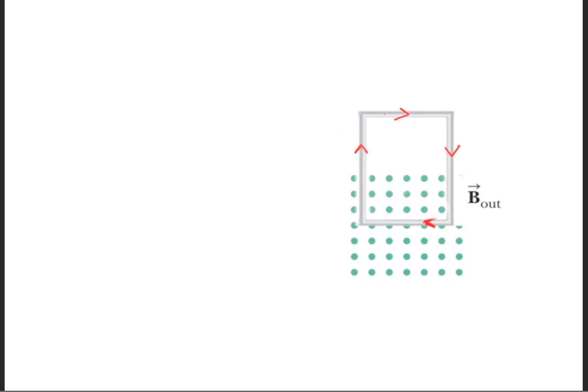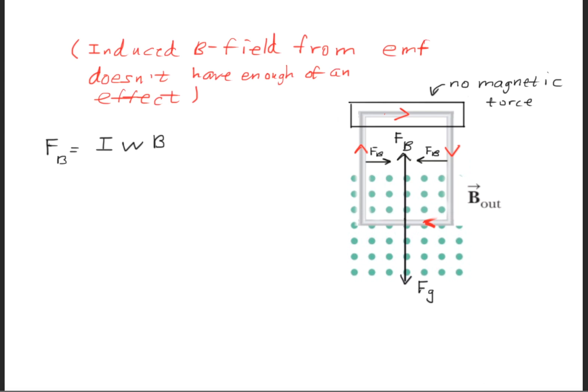Let's look at the diagram once more. The loop of wire is falling down into the magnetic field, and we know the induced current will be moving clockwise. Let's draw the forces acting on this system. We have the force of gravity acting in the y direction, pulling it down. We have a magnetic force from the bottom of the loop of wire going upwards. In the x direction, there are two other magnetic forces pointing inwards, but those cancel each other out.